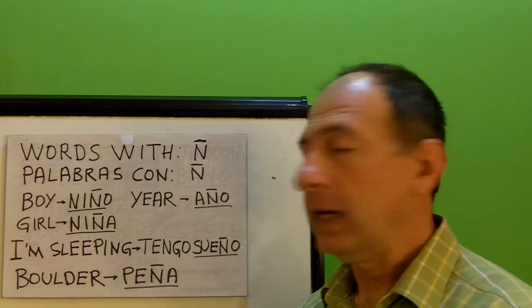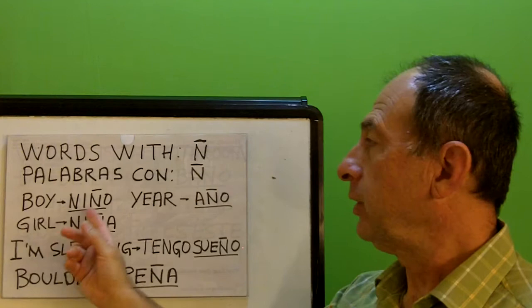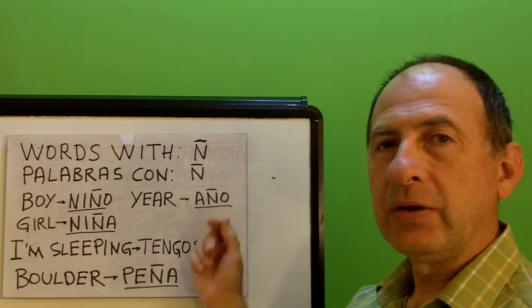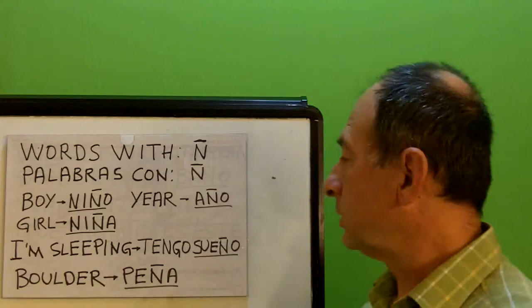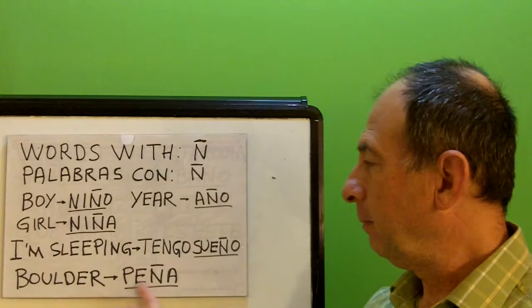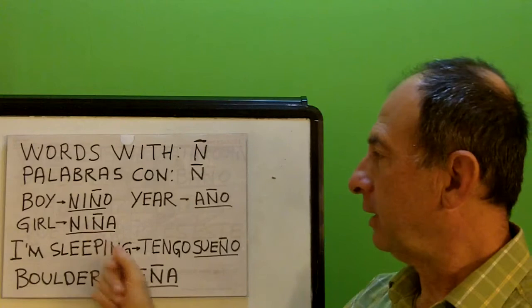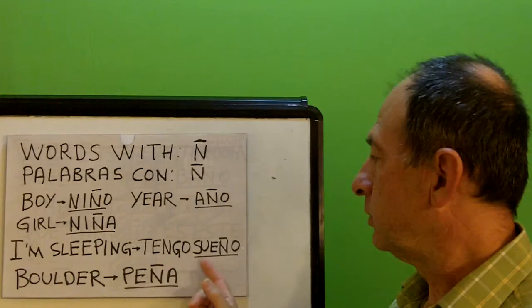We're gonna start right off the bat. Boy: niño. Girl: niña. Just listen to it and practice it. Year: año. I'm sleeping: tengo sueño. Boulder: peña. Come with me — niño, niña, año, tengo sueño, peña.